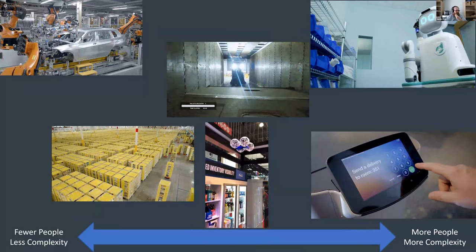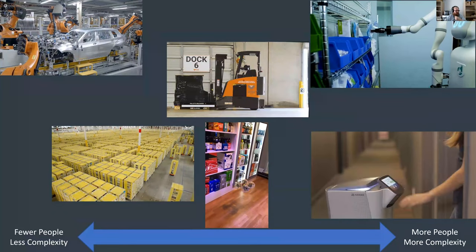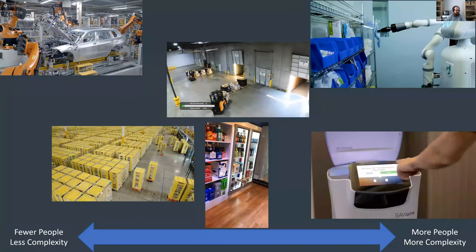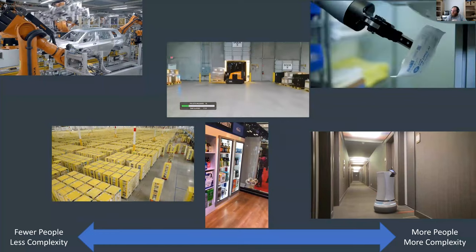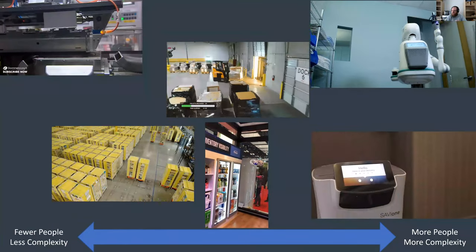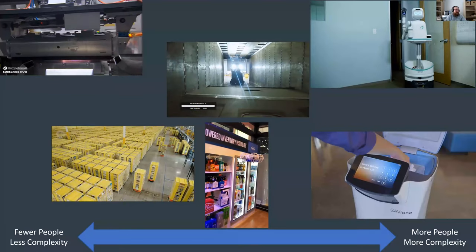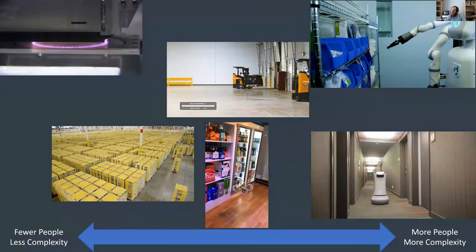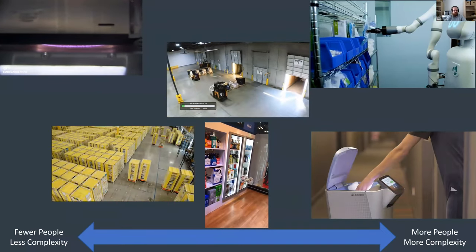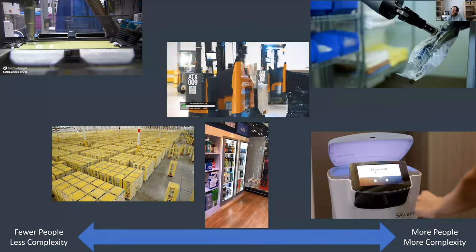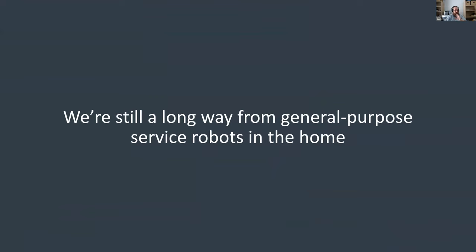Looking at this chart, the earlier victories are robots in applications involving fewer people and less complexity. People introduce complexity — they move around in unmonitored ways and introduce items the robot may not recognize. On the right are less constrained environments, significantly less structured and with significantly more people around than a robot operating in a work cell. We're still a long way from general-purpose service robots in the home.